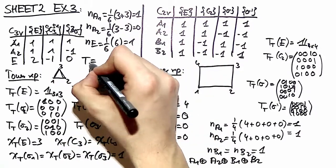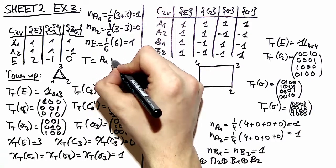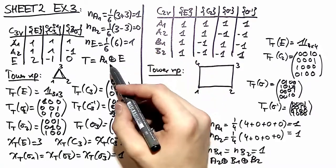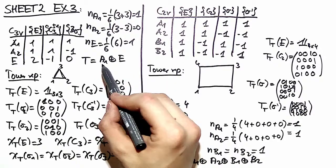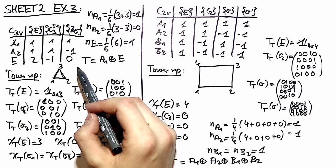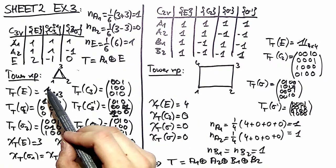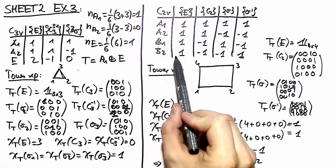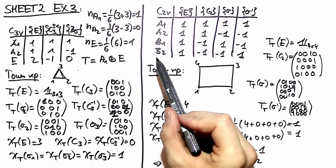Therefore we conclude that our tower representation consists of A1 plus E. A dimensionality check confirms this object is three-dimensional, as is our tower representation. So we've done everything correctly and decomposed the tower representation of C2V and C3V into their irreducible components. Thank you for watching — I hope you enjoyed it. See you next time.